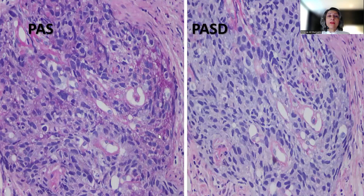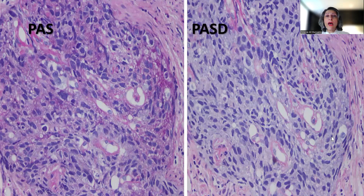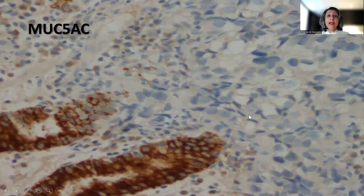PAS/PAS-diastase shows that the clearing in the cytoplasm is because of glycogen content. There is some granular positivity with the PAS stain that was digestible with PAS-diastase.